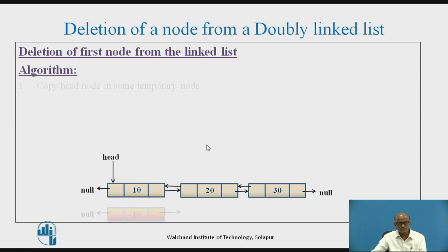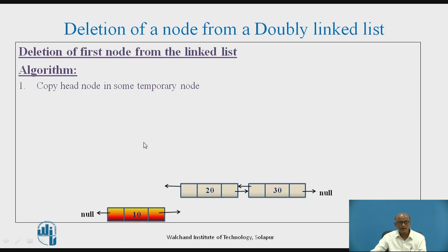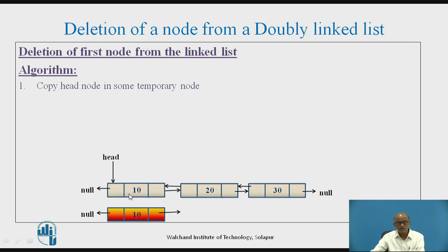Now the algorithm: first, we need to copy the head node into a temporary node — store the address of this particular node in a temporary pointer, so we declare a temporary pointer. Second, after removing the first node, head should be assigned to the second node in the next step. Then we free the address of this particular node.